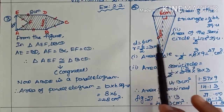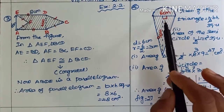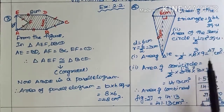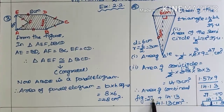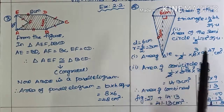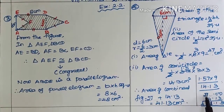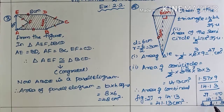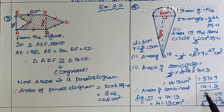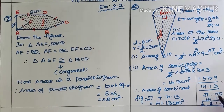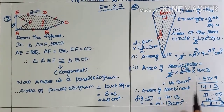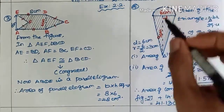Area of the combined figure — combine, so we add. Area of the triangle = 27 cm² plus area of the semicircle = 14.13. Therefore: 27 + 14.13 = 41.13 cm². The area of the combined figure is 41.13 cm².